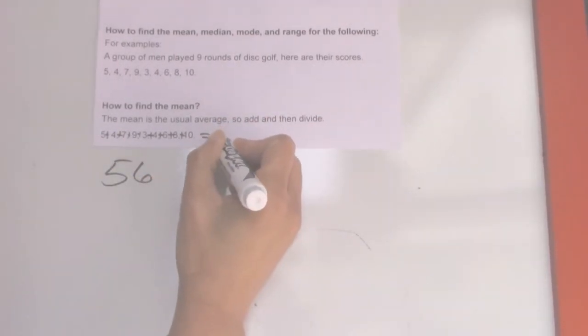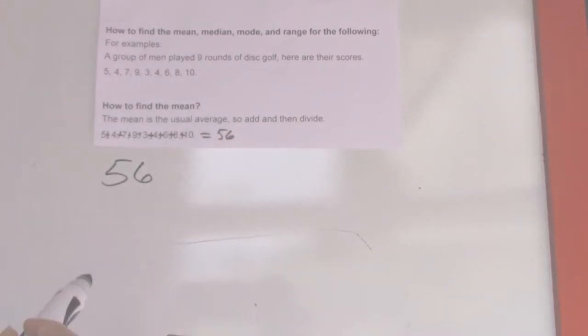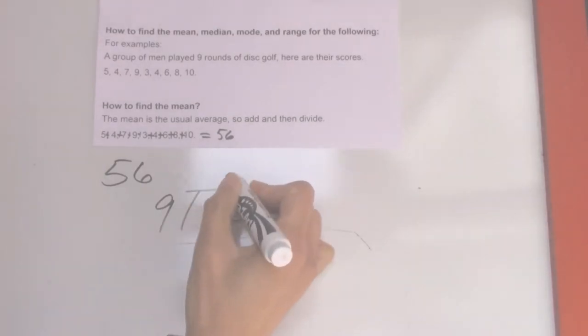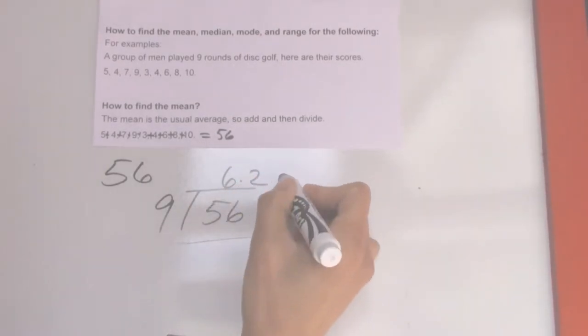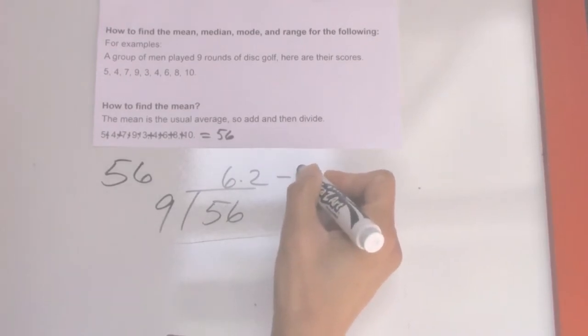And then you divide it by 9, so 56 divided by 9 equals 6.2. So that is the answer for the mean.